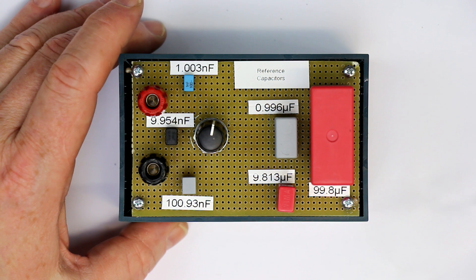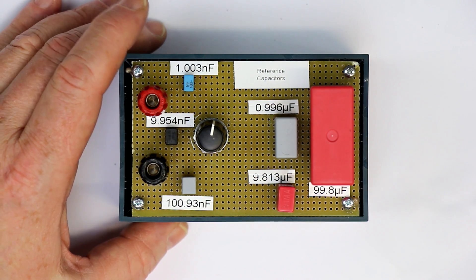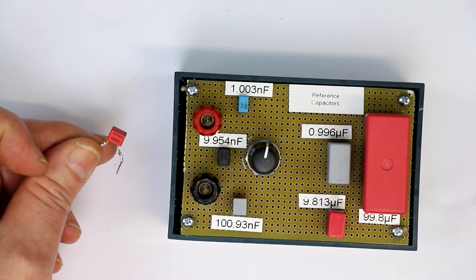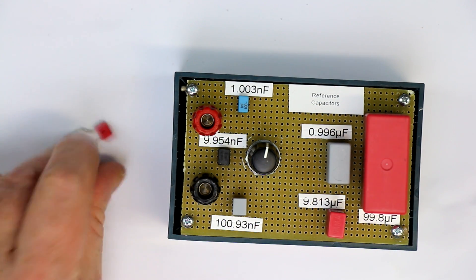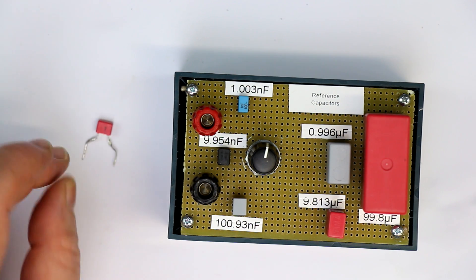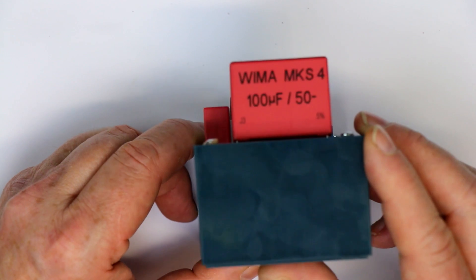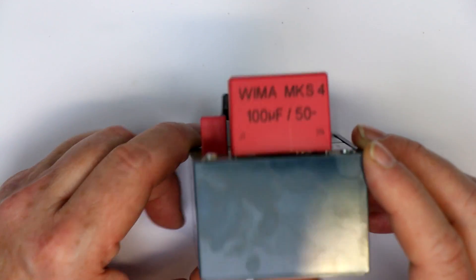And ordered an assortment of all in all seven film capacitors with between 1% and 5% tolerance. It starts with this little Wima 100 picofarad, 1%.